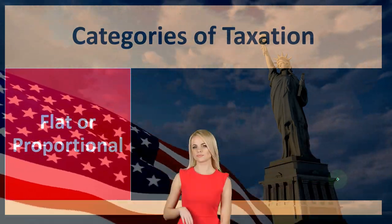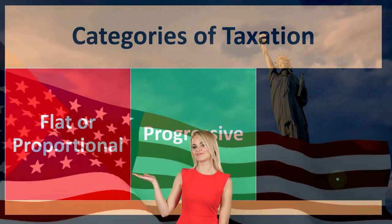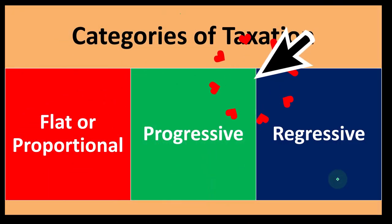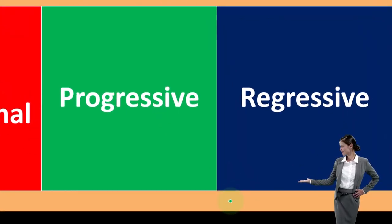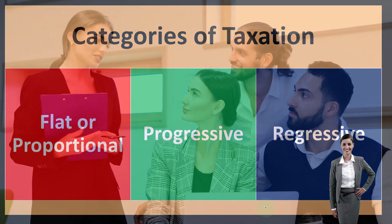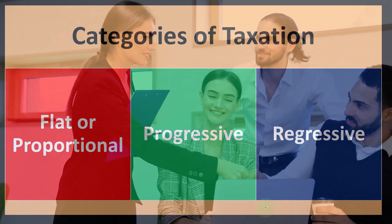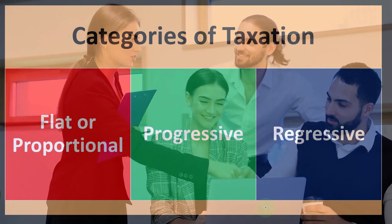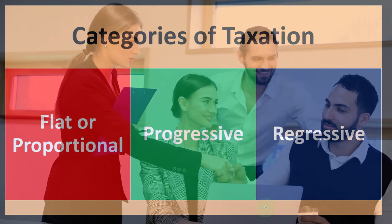As we think about different types of taxes, we can categorize them using terminology you'll often hear: a flat or proportional tax, a progressive tax, and a regressive tax. These terms come up whenever someone is going to change tax law — you might hear things like 'they're trying to flatten out the tax code,' or 'they're making the tax more or less progressive,' or 'the tax code is regressive.'